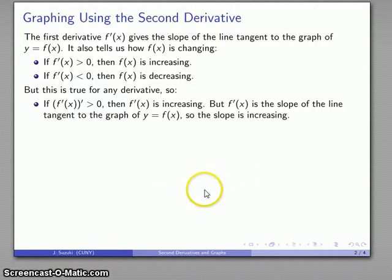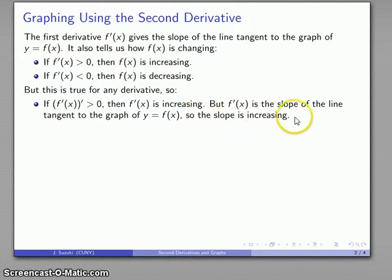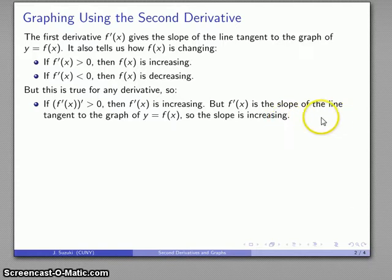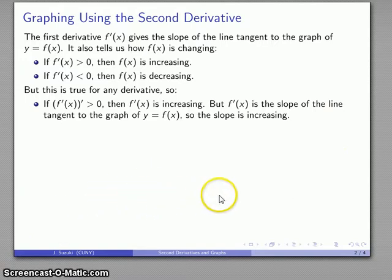The slope of a line is constant. If the slope of a line is increasing, you're not dealing with a line. You should be careful to remember that in every statement of that form there is an unstated and implied 'as x increases.' So the slope is increasing as x increases, as we move from left to right. It's not that the slope of the tangent line itself is increasing, but as I move left to right on the graph, the slope of the tangent line drawn at those points will be increasing.